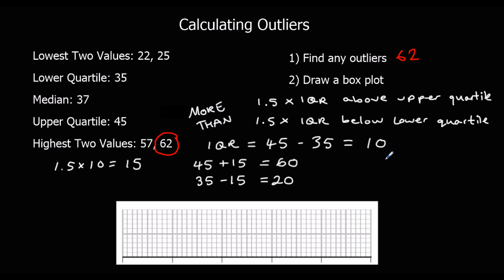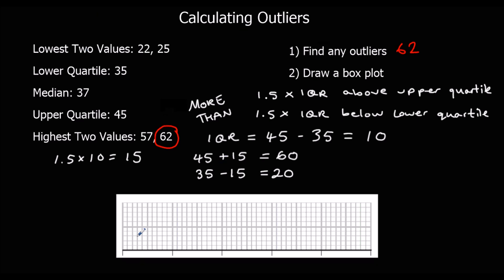When we draw a box plot, we mark outliers with a cross, with an X. So we're going to need a scale on here first. 62 is an outlier and we're going to mark it with an X. That indicates there was an outlier. We're going to use the next highest value, 57, as the line — so 57 is the new highest value.